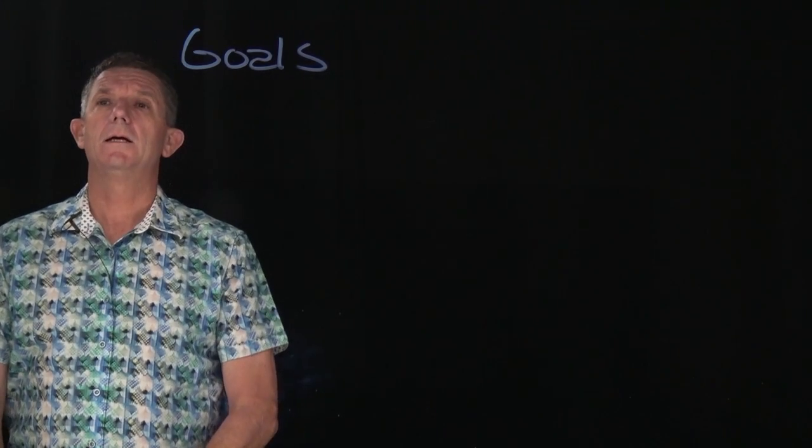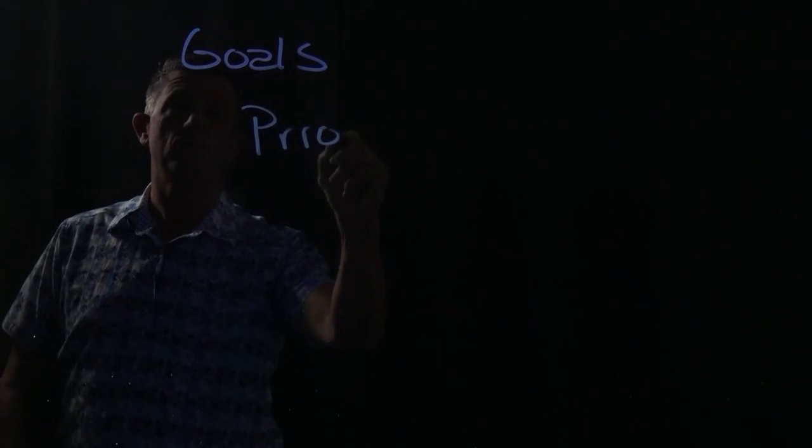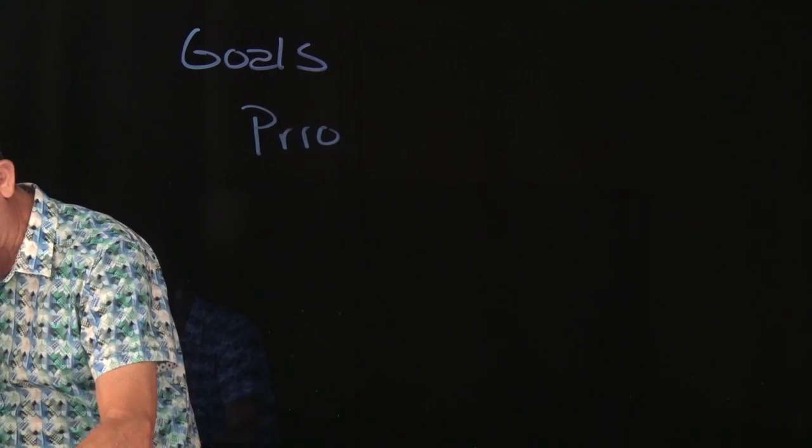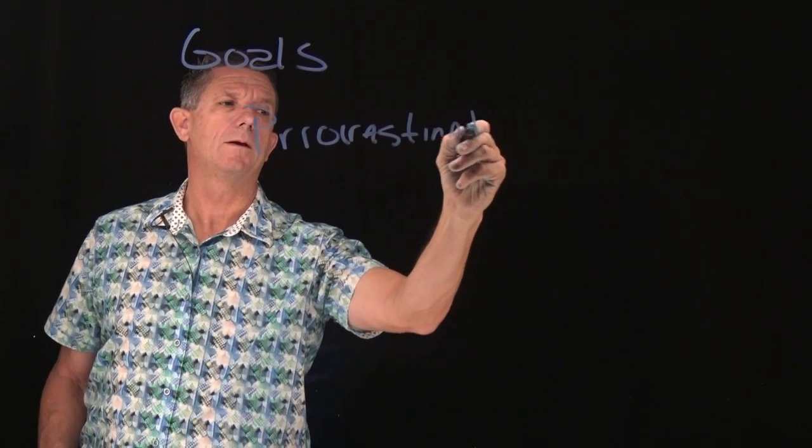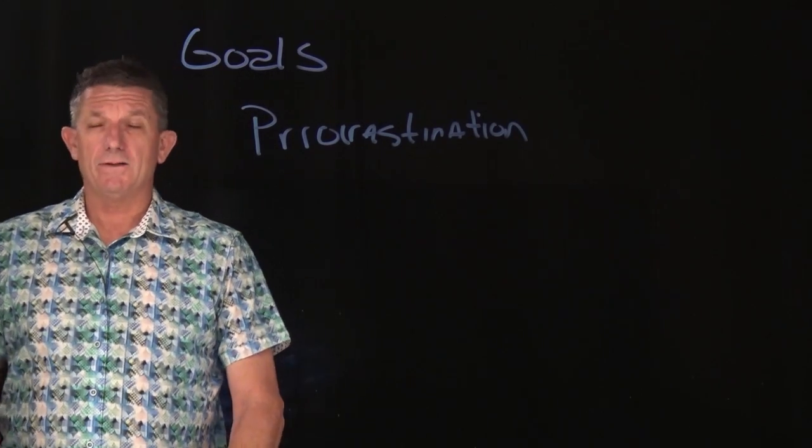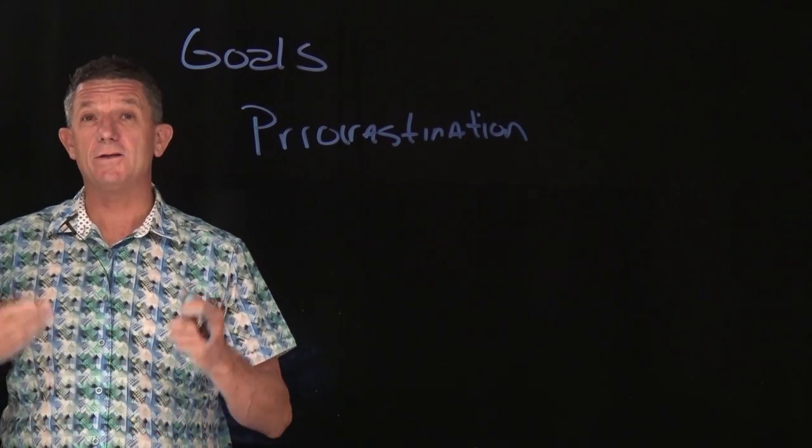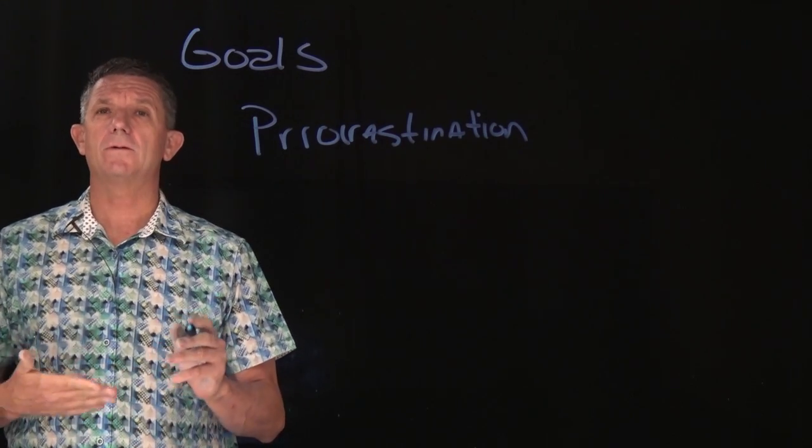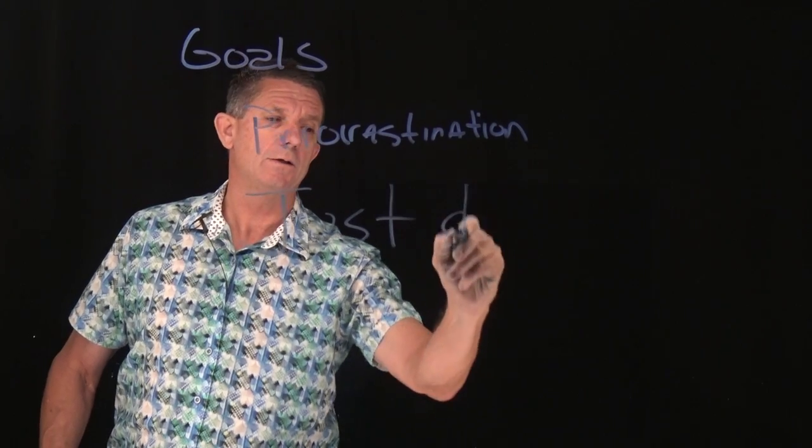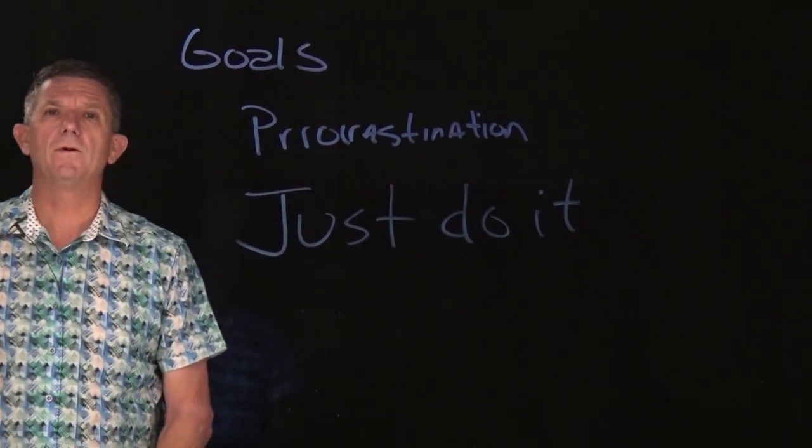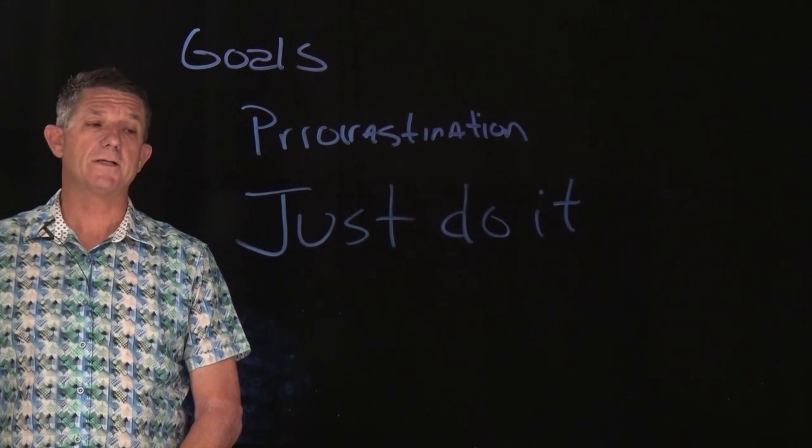The number one issue after we set goals, what do we have to overcome? Well, it's that dreaded word. Procrastination. So when we look at procrastination, we look at, oh, I set some goals. How am I going to do it? The first thing is you have to identify that you procrastinated. So when you find out you procrastinated a little bit, the next step is just to look at it and just do it.